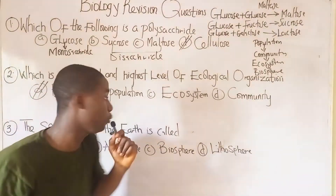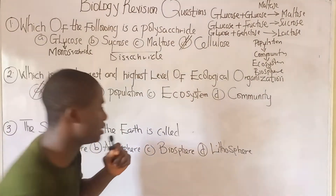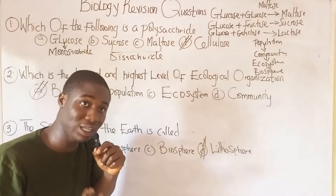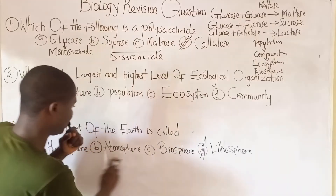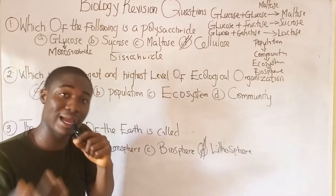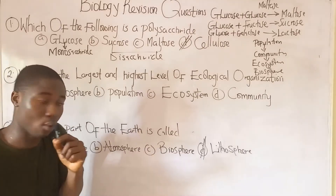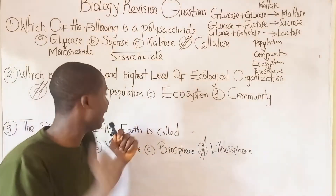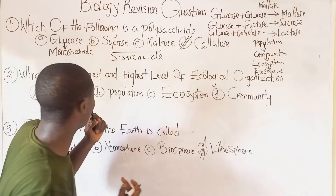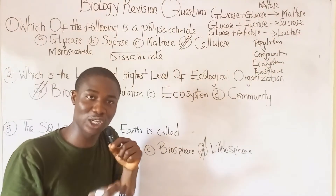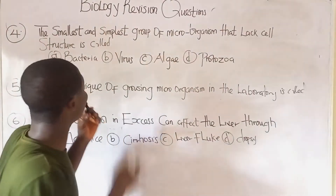Question three asks: what is the solid part of the Earth's crust called? It is called the lithosphere. The zone where life exists is the biosphere, the zone where gases are found is the atmosphere, the zone where water is found is the hydrosphere, and the solid part of the Earth is the lithosphere.